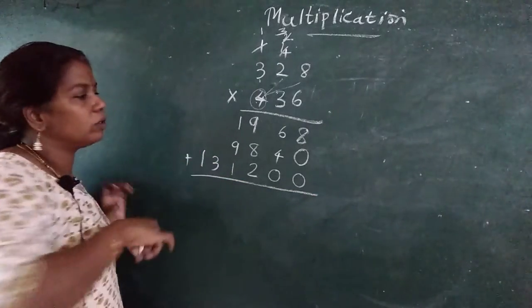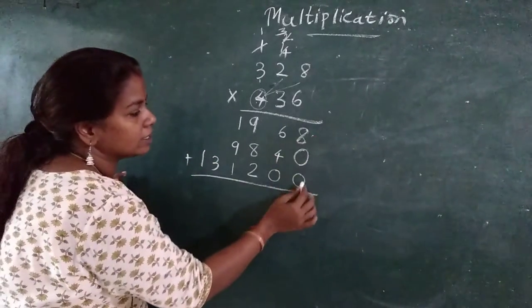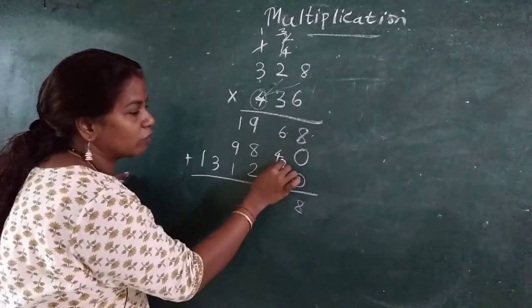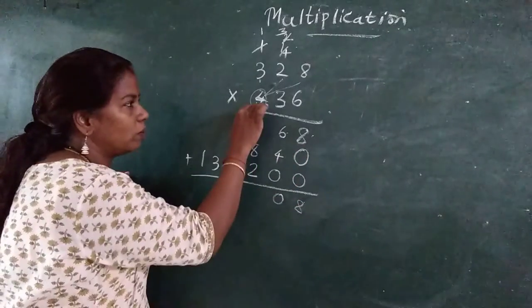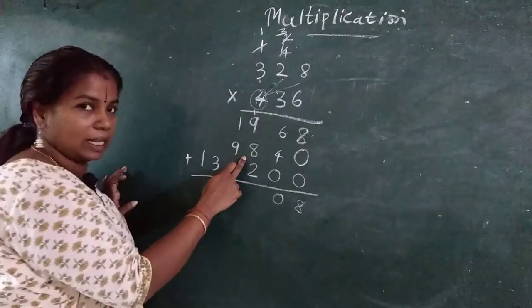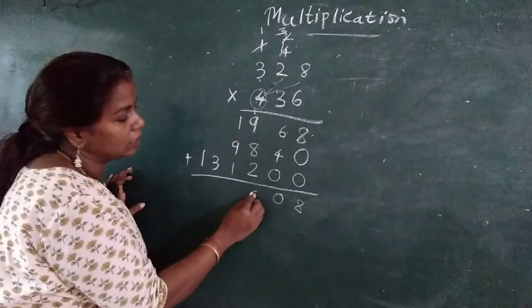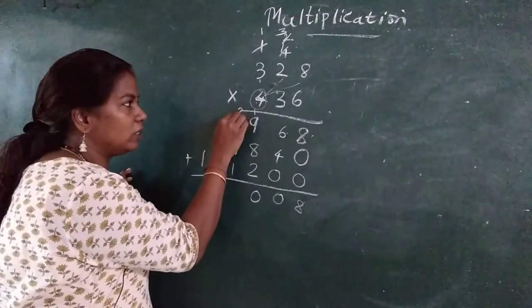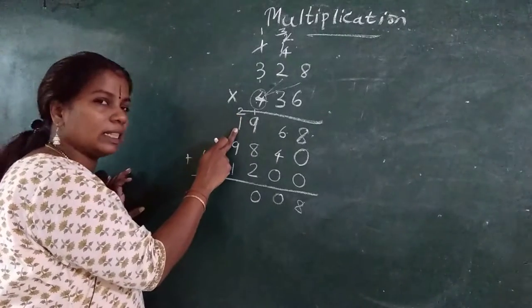Now what I will do? I will add. 8, 6 plus 4, 0. 1 carry. 9 plus 1, 10. 10 plus 8, 18. 18 plus 2, 20. 0. Put here 2. 2 plus 1, 3.